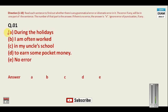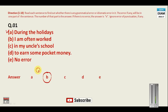Question number one: 'During the holidays I am often worked in my uncle's school to earn some pocket money.' Since we are using the word 'often,' which is normally used in present simple tense, the correct form is 'I often work in my uncle's school.' Your answer for question number one will be B. If correct, give yourself one mark; if attempted wrongly, minus 0.25.